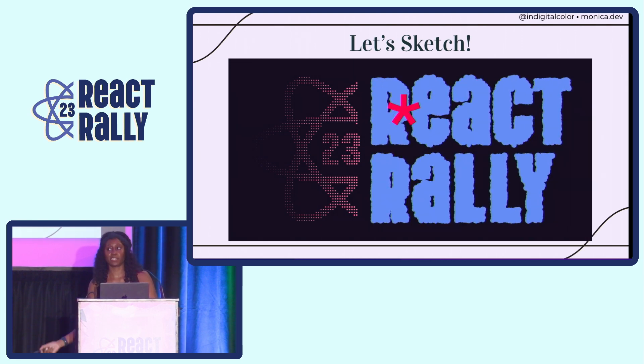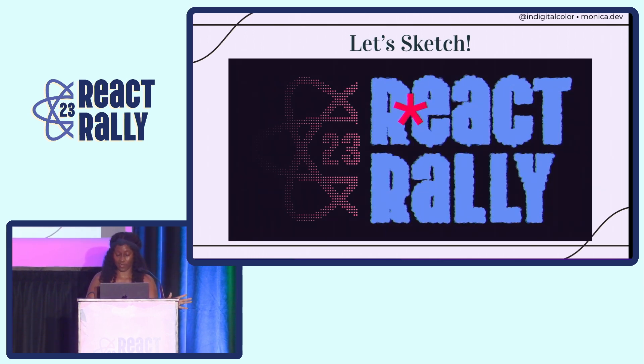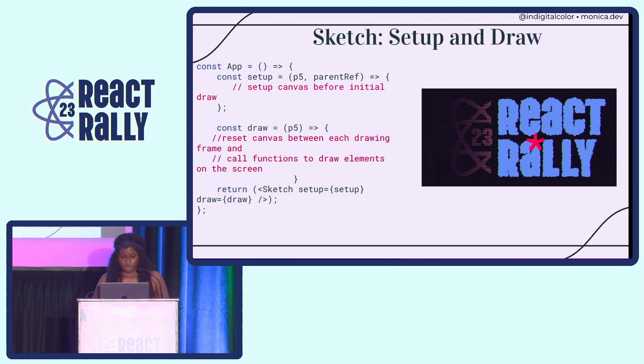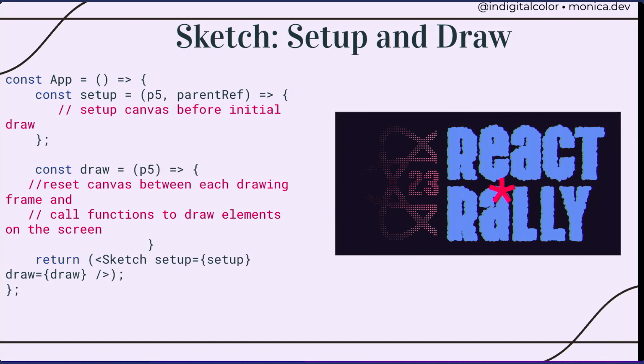So let's get into actually creating something with p5.js and React. So this is an example of something that I created based off of the React Rally logo. And the fundamental parts of this sketch are we have our React component, and then within that we have both a setup function and a draw function, which is something we've already seen. And then we now have this sketch component that we're getting back from React P5, and then passing in those two functions.